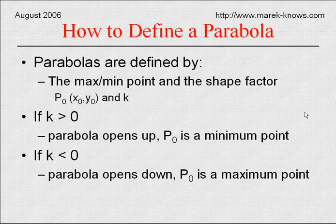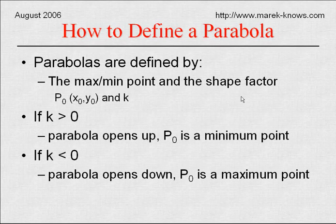To define a parabola you need to know where the minimum or maximum point is located as well as what is the shape factor. So minimum and maximum point are defined by x naught y naught and the shape factor is the value k.